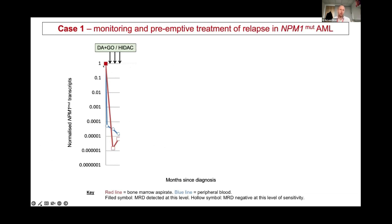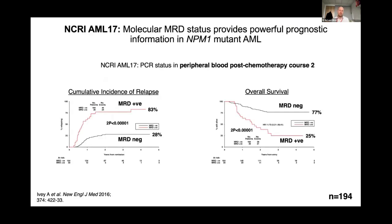What does this tell us clinically? The patient has had two to three courses of induction chemotherapy, and after the second one both the blood and the bone marrow are negative. This information for NPM1 patients in the UK, and increasingly in other countries, is now used to decide whether the patient should have a transplant in first remission. A transplant is a life-changing procedure — it carries a risk of death of between 10 and 20%, and survivors are at risk of long-term conditions such as graft-versus-host disease. It's extremely costly, about £200,000 per procedure, so we really want to focus this where it's absolutely needed.